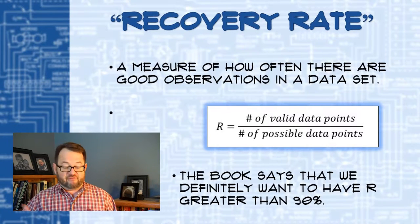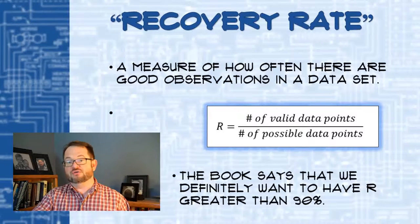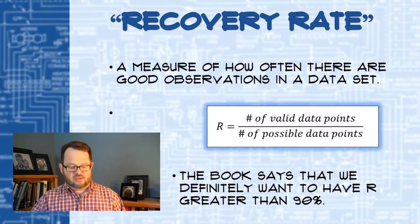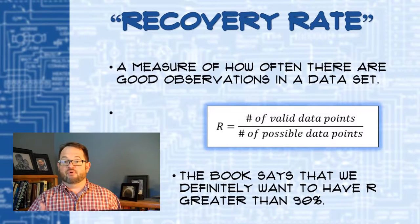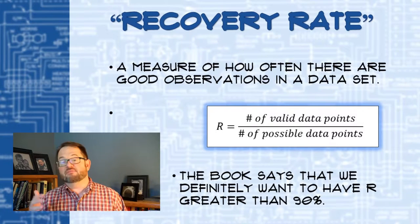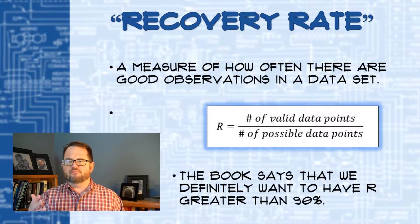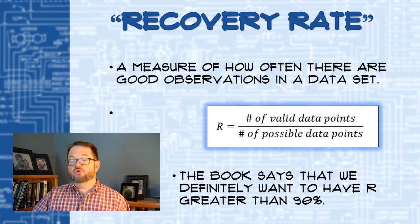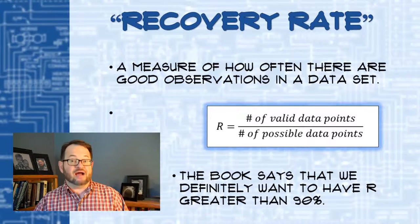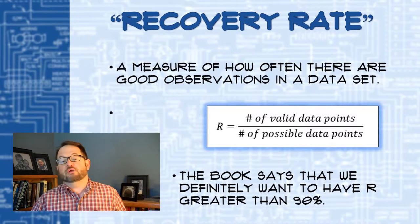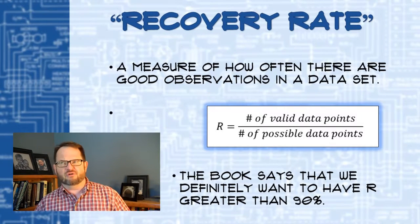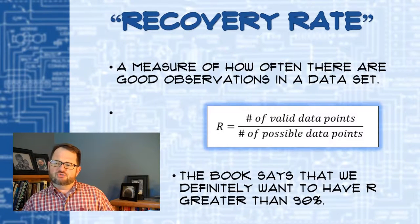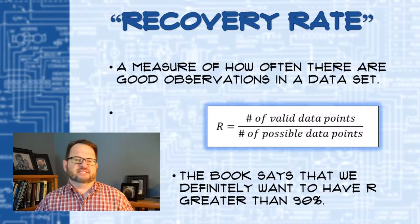The recovery rate, given by symbol R, is the ratio of the number of valid data points in the data set divided by the number that were possible. For example, if you were measuring something once every hour in a 24-hour period, there would be 24 possible observations. If you collected 18 valid observations and six are missing, your recovery rate R would be 18 divided by 24, or 0.75. This is easy to compute — Excel can do it.